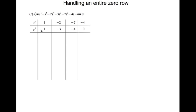Write down the row for s^5. This is the coefficient of s^5, skip one power of s, this is the coefficient of s^3, skip one power of s, this is the coefficient of s, and then a zero.